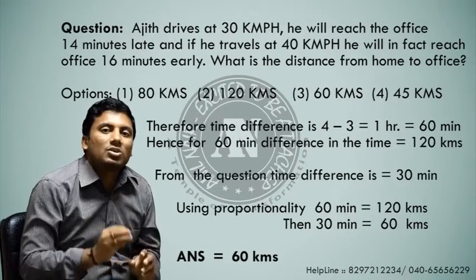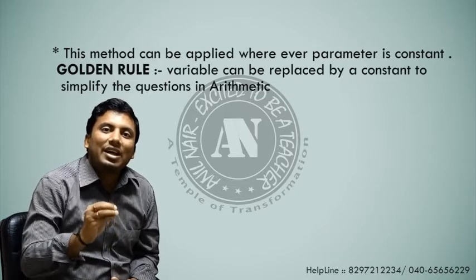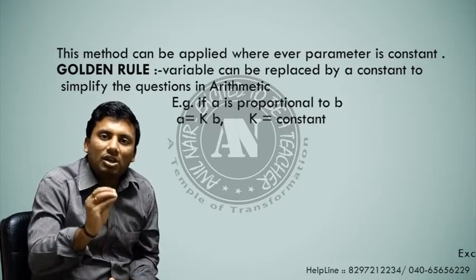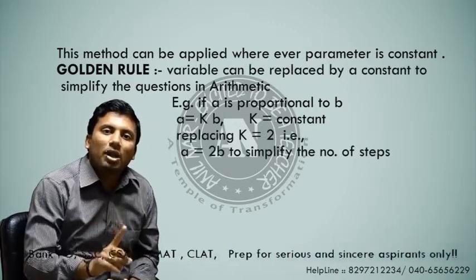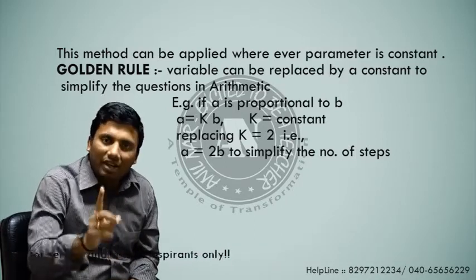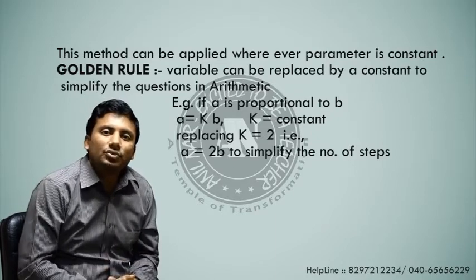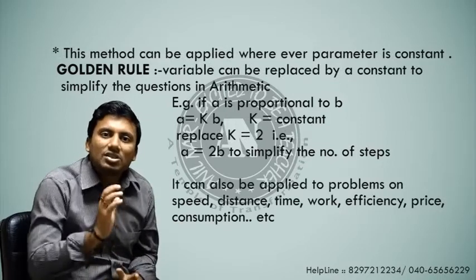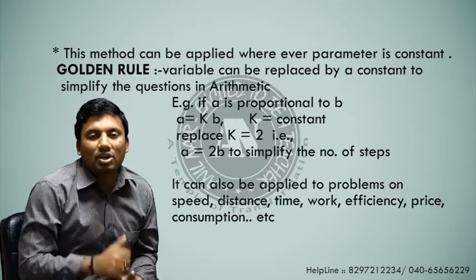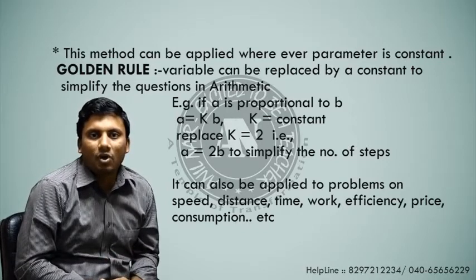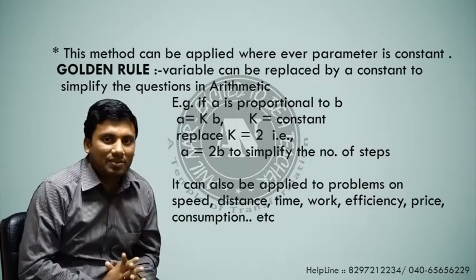In all problems where one parameter is constant, replace that constant with a variable — for example, in direct proportionality, a is proportional to b means a equals k times b, where k is a constant. Remove it and replace it with a numerical value. You can use this concept wherever speed, distance, time, work, efficiency, price, or consumption is constant. Take the LCM from the given values — that is the gist of the method.